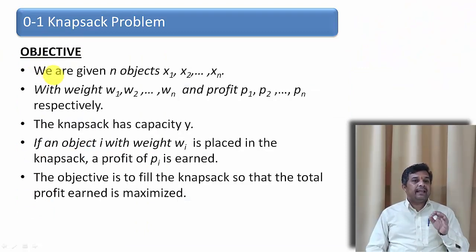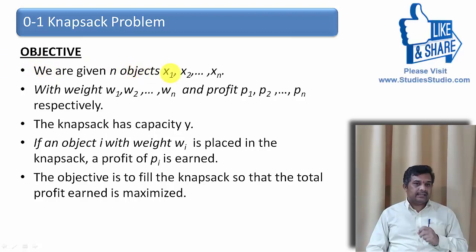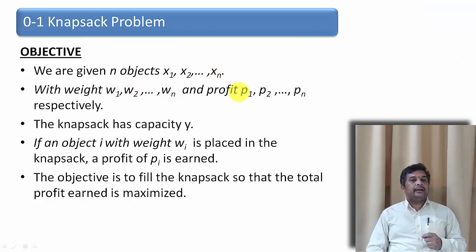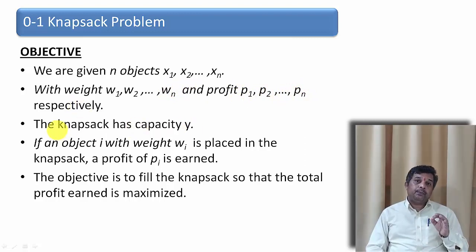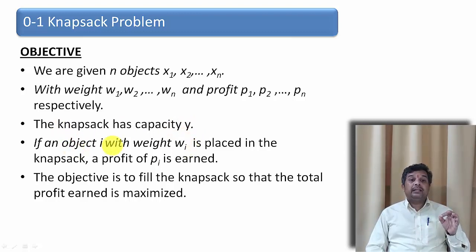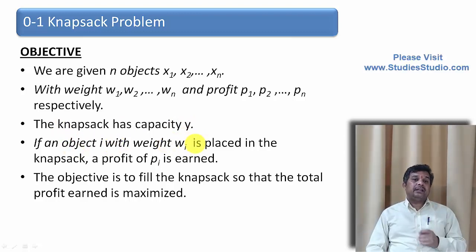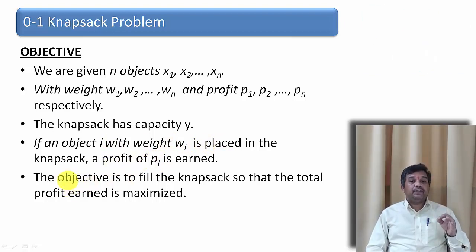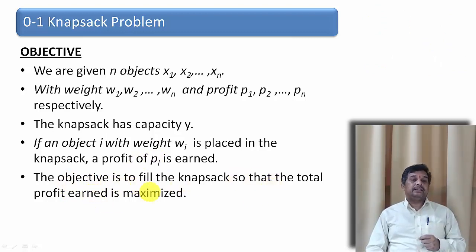Let us see the basic objective. Let the objects be x1, x2, up to xn. The corresponding weights are w1, w2 up to wn, and the profits that we can earn are p1, p2 up to pn respectively. Let the capacity of the knapsack be y. If object i with weight wi is placed in the knapsack, a profit of pi can be earned. The objective is to fill the knapsack so that the total profit earned is maximized.